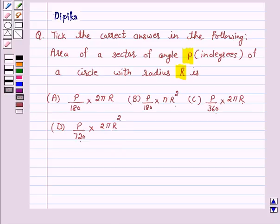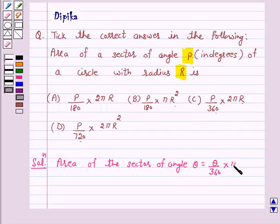So let's start the solution. Now we know that area of the sector of angle θ is equal to θ upon 360 into πR².